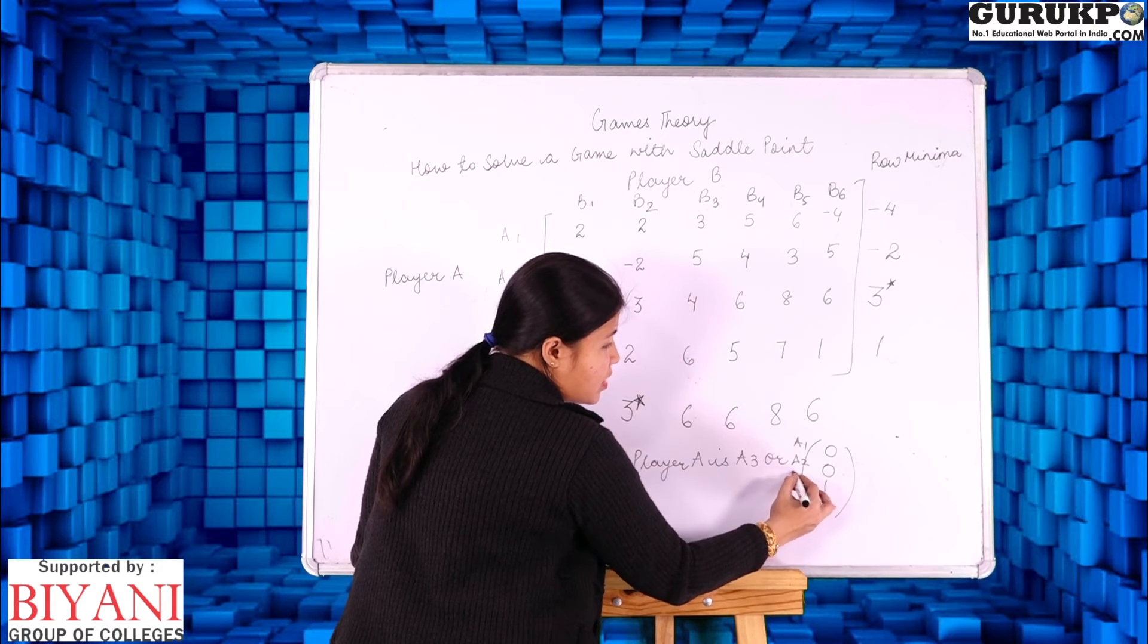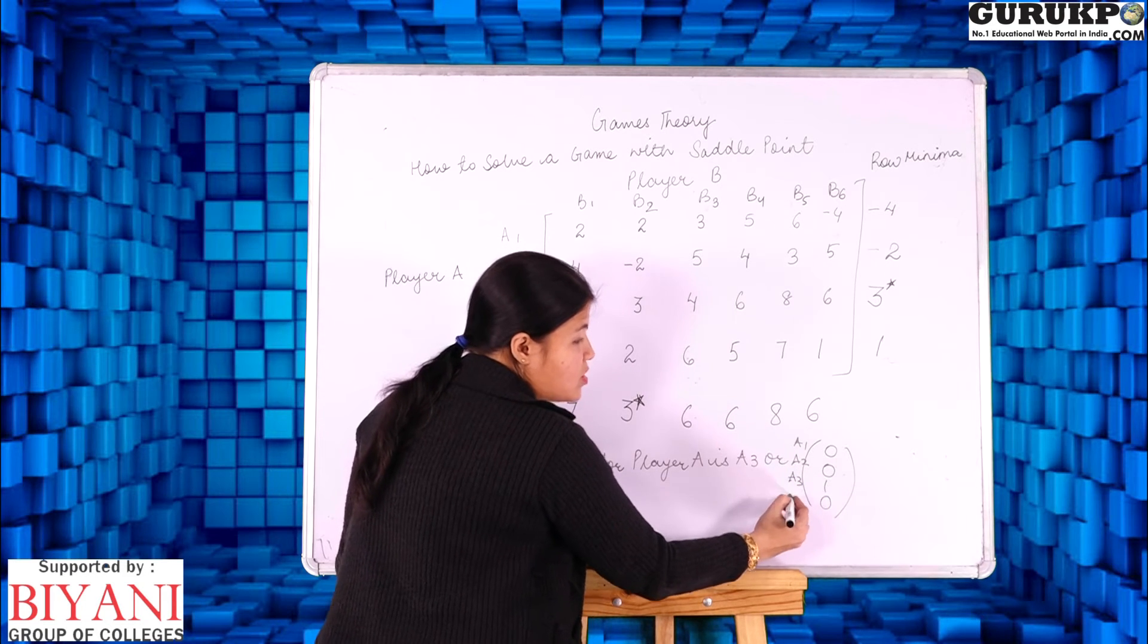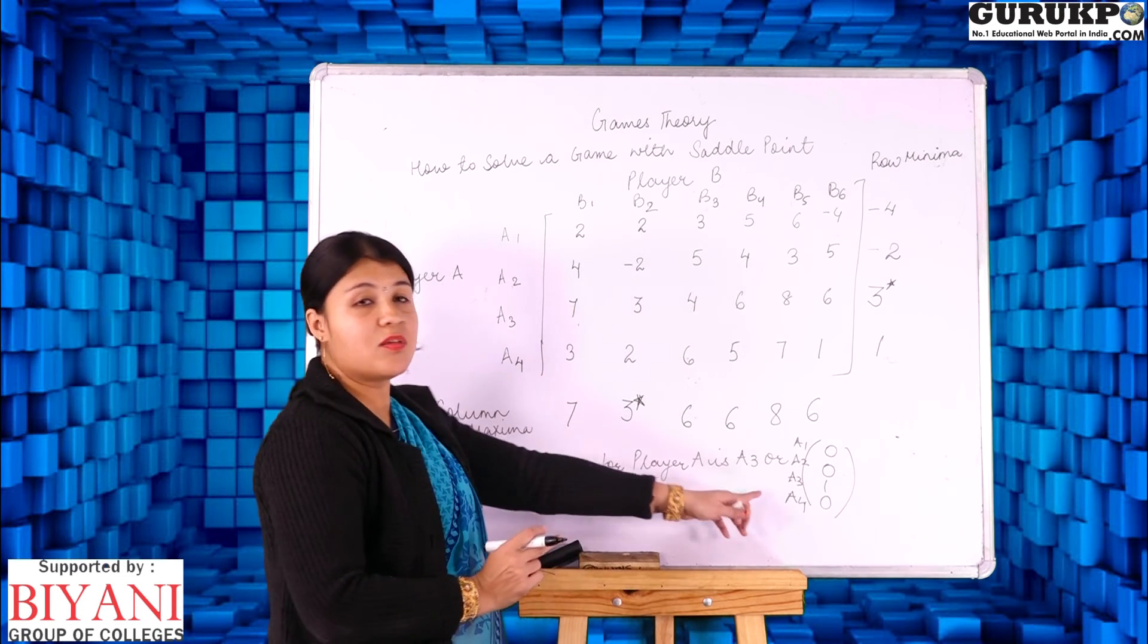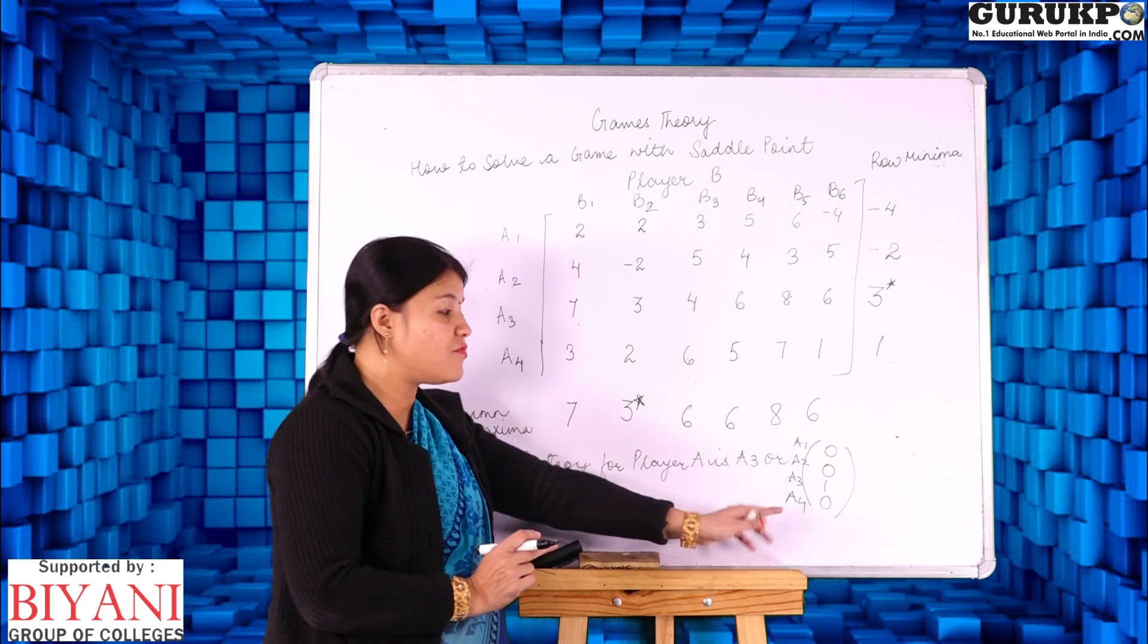A1, A2, A3 is the place where there is saddle point so we are going to indicate here 1. This is another way how to indicate strategy for row player.